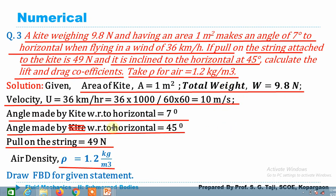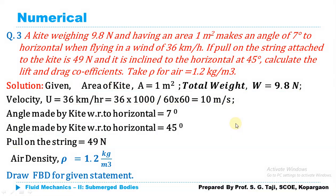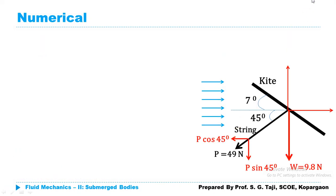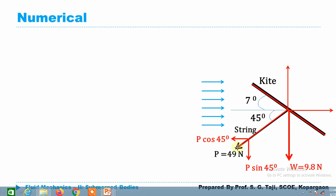To compute drag force and lift force, we need to draw a free body diagram. Once we draw the free body diagram we can easily compute drag and lift force, and then calculate the coefficient of drag and coefficient of lift. Here we've drawn the FBD for the kite flying in air, making an angle of 7 degrees with the horizontal. The string pull also makes 45 degrees with the horizontal.